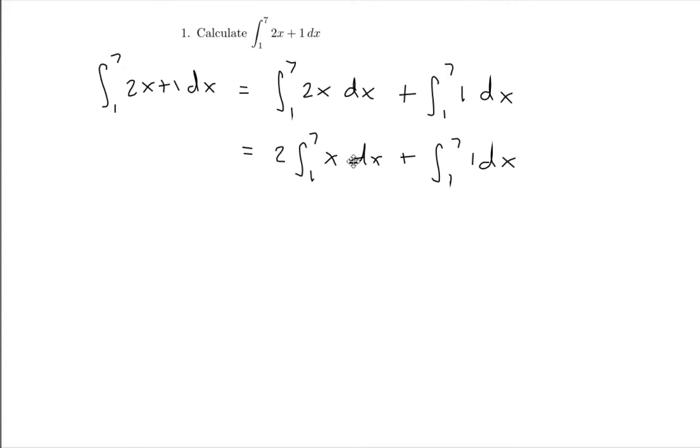Now that I have it in this form I can calculate these two definite integrals by using our formulas for anti-differentiation. So this becomes 2 times the anti-derivative of x which is one-half x squared, and I'm going to evaluate that from 1 until 7. And then the anti-derivative of 1 which is just x, and I'm going to evaluate that from 1 to 7.